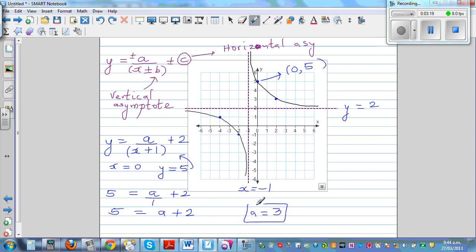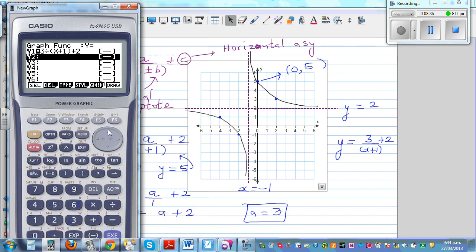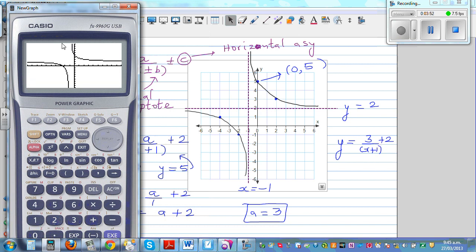I'll write the equation and then check it on the calculator. The equation is y equals 3 over x plus 1, plus 2. Let me type it in: 3 divided by x plus 1, plus 2, and then draw the graph. This is the graph.